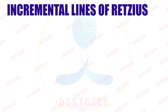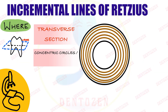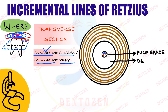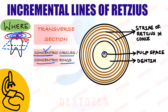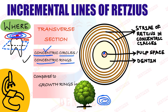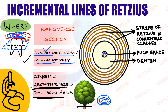In cross section or transverse section, the incremental lines look like beautiful concentric rings or concentric circles — all placed around the same common center. When we take a cross section, in the center we have the pulp space, surrounding that we have dentine, and in the enamel we have these concentric rings. These concentric rings are compared to the growth rings or annular rings seen in the cross section of a tree.